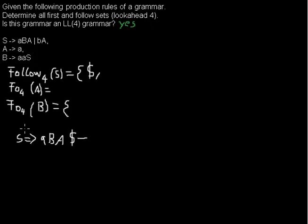In the next step, I could derive from the A the terminal A and I would get ABA dollar. And here you see that in the follow set of B there is indeed A and the end of the word.